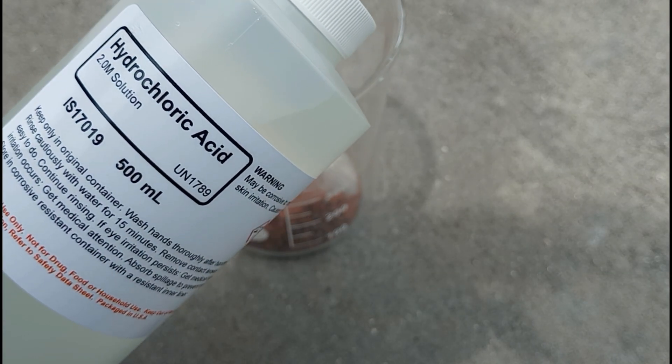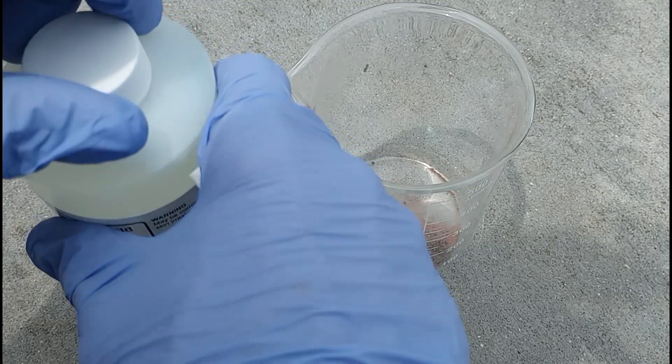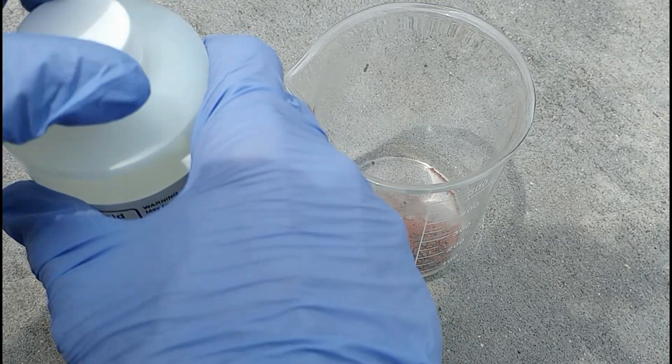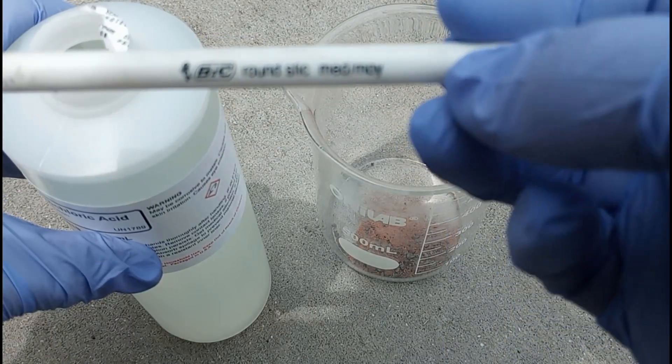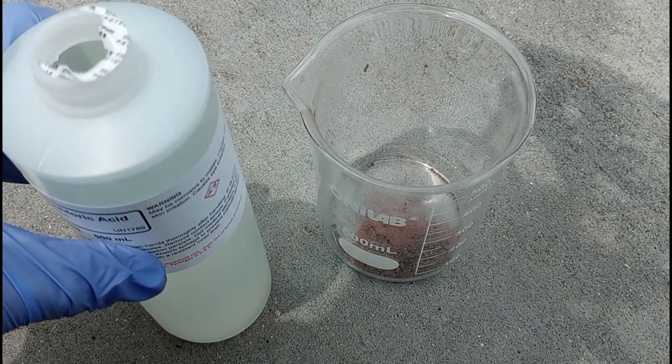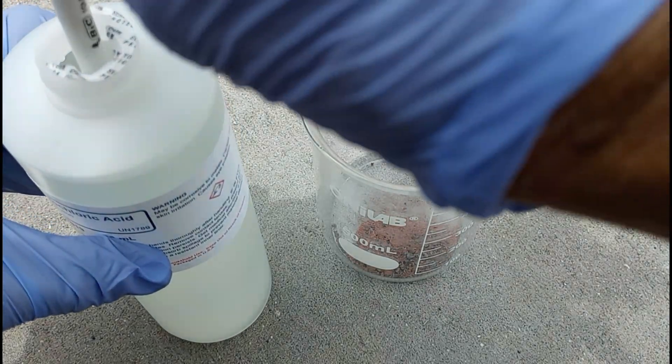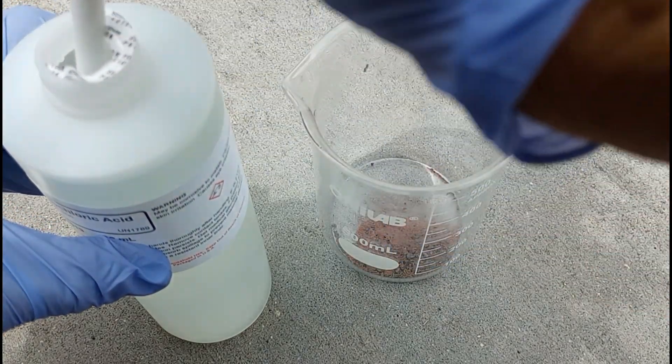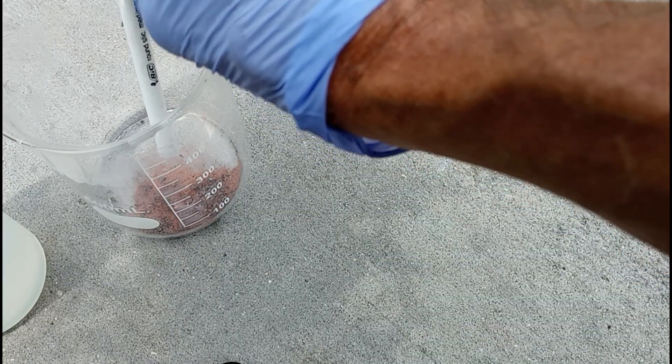We put all the copper substance into a beaker, and we have here a 2 molar solution of technical grade hydrochloric acid. We'll start with just a little bit at a time to see if we get any type of reaction. If it is pure copper, it should not react at all with hydrochloric acid alone. If it's zinc oxide or a copper oxide, it will dissolve in the hydrochloric acid.